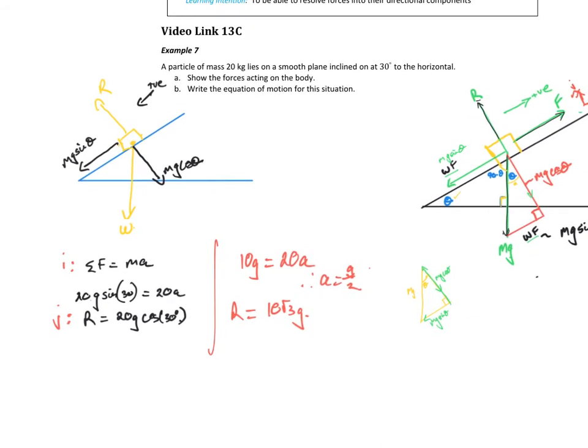So if we have a look at this particular example: particle mass 20 lies on a smooth plane — so there's no friction — inclined at an angle of 30 degrees to the horizontal. Show the forces acting on the body. So it's just lying there. We've got the reaction force, my weight force acting vertically down, reaction force acting perpendicular to the plane. Then we've just got the component of the weight force, mg sin theta acting down the plane, and the component mg cos theta acting perpendicular to the plane.